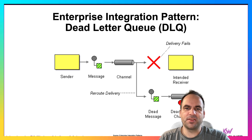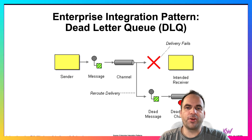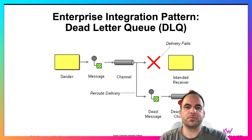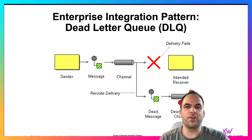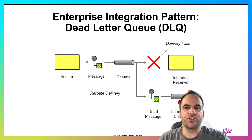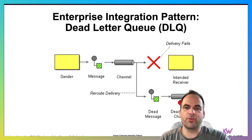In this case you see it's already an event-driven architecture where you have a sender and a receiver, and in the middle you have the channel where the message is transported. If something fails, you simply send this message not to the intended receiver but to a dead letter channel to handle failures and error messages differently.